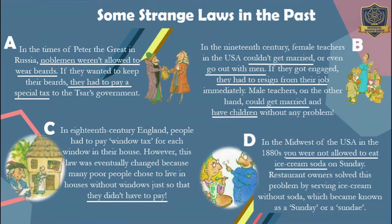Now we can start from A. Some strange laws in the past — from A: noblemen weren't allowed to wear beards. They had to pay a special tax. And B: female teachers couldn't get married or go out with men. They had to resign from their job.